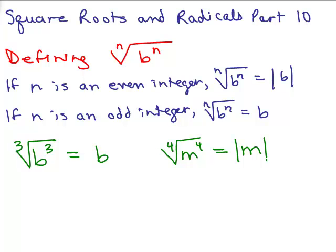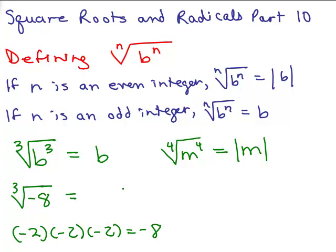Often in textbooks it'll say assume all the variables are positive so you don't have to put the absolute value signs. Let's look at an example with numbers: the cube root of negative 8. This is the first time I've put a negative number under the cube root sign. What number cubed is negative 8? Well, 2 cubed is 8, and negative 2 cubed is negative 8. So the answer is negative 2.